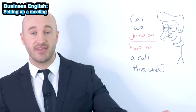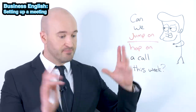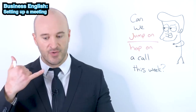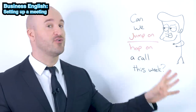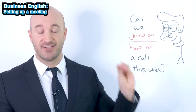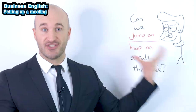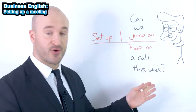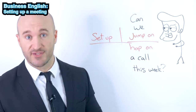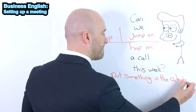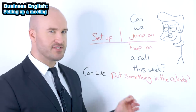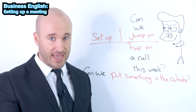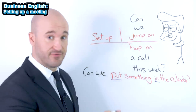If you want to set up a meeting or a video chat with someone — message them, email them, call them. No one uses a phone like a phone anymore. You can use: 'Can we jump on a call? Can we hop on a call?' — it just means, can we arrange it? Can we have a chat? You can also say, 'Can we set up a call?' or 'Can we put something in the calendar?' In business, everything works with calendars and schedules, so you'll need that phrasal verb.